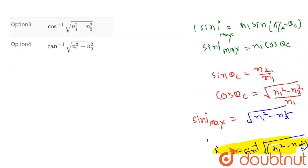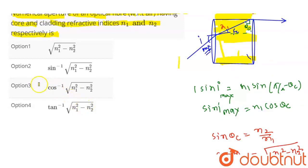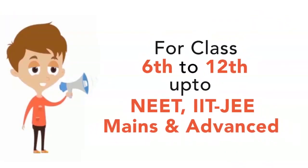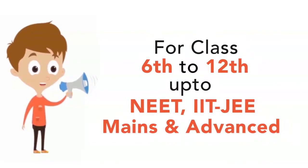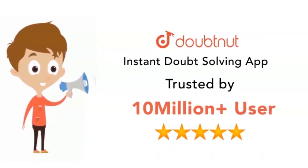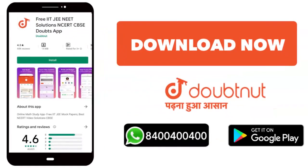From the right hand side, just click the second option. Classes 6 to 12, NEET, IIT Mains and Advanced levels, 10 million students today. Download Doubtnet or WhatsApp your doubts to 8404408040.